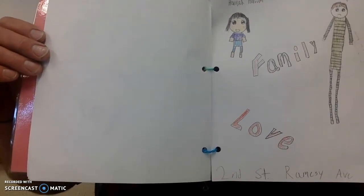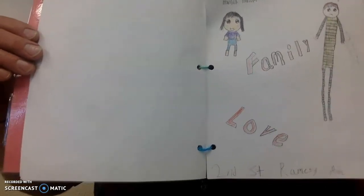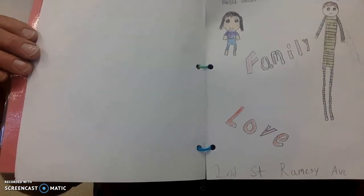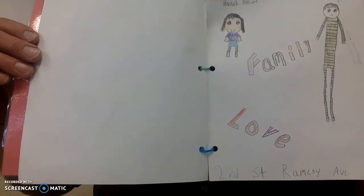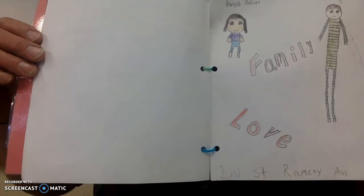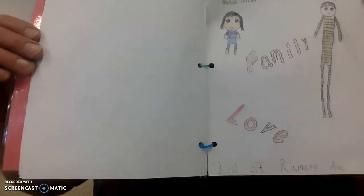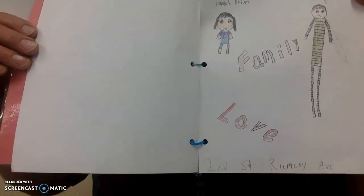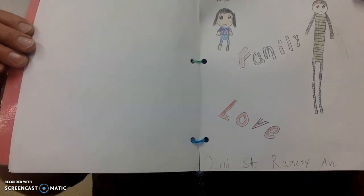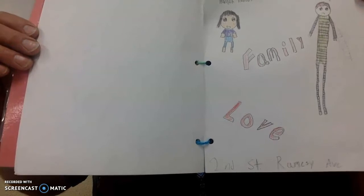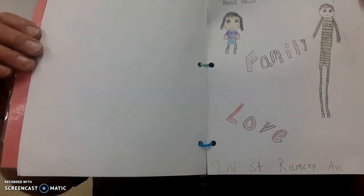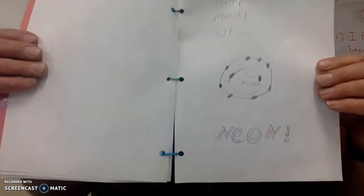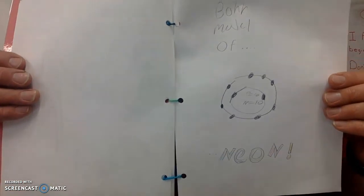Down at the bottom we have the address. It's 'Second Street, Ramsey Avenue.' What that's from is that this particular element was neon — it's in the second period on the periodic table, so the address is Second Street. Ramsey is the discoverer of this particular element, so that's why the street name is Ramsey Avenue.